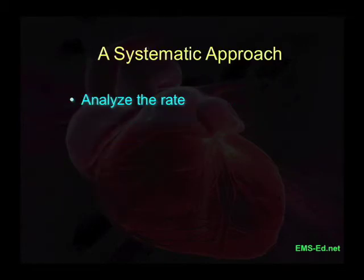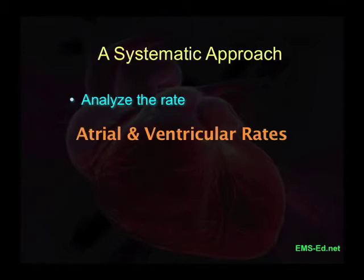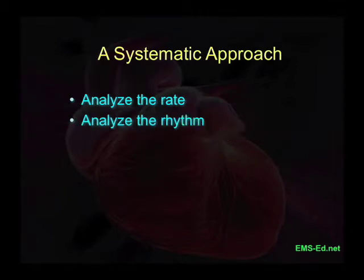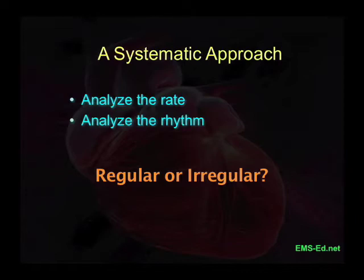Our approach to EKG interpretation should always be a systematic one. We should consider and analyze the rate — the rate of the atria, the rate of the ventricles. Then analyze the rhythm: is it regular, regularly irregular, or irregularly irregular?